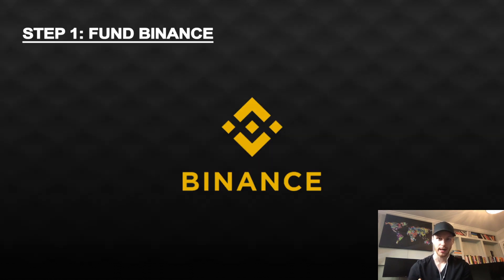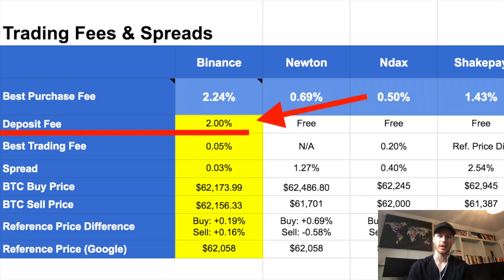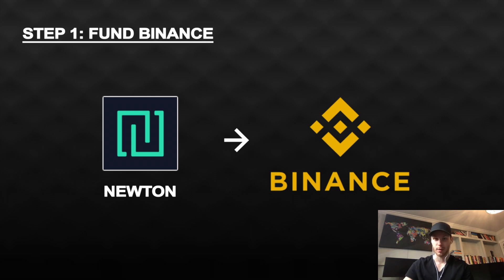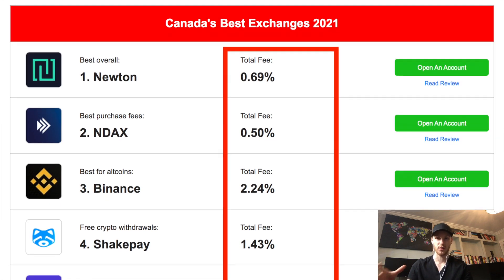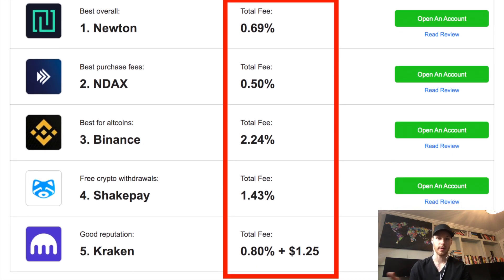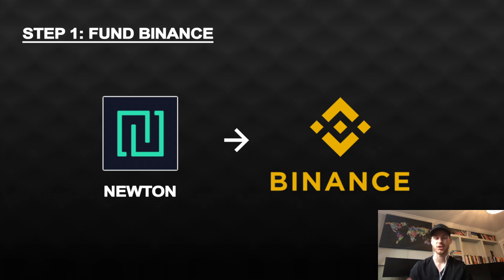Step one is to fund our Binance account, so we need to buy crypto on a Canadian exchange and then send it to Binance. You can buy crypto directly on Binance with a credit card, but there's a minimum 2% fee and there might be extra fees from your bank, so I don't recommend doing that. Instead, we'll buy crypto on a Canadian exchange and send it to Binance because it'll be a lot cheaper. I'm going to use Newton — we'll deposit Canadian dollars, buy the cryptocurrency called Stellar (XLM), and send it to our Binance account. Newton is one of the cheapest exchanges I tested out of 11 options, and it costs zero dollars to send Stellar to Binance. Other coins or exchanges might charge you $10, $20, or $30 in transaction fees.